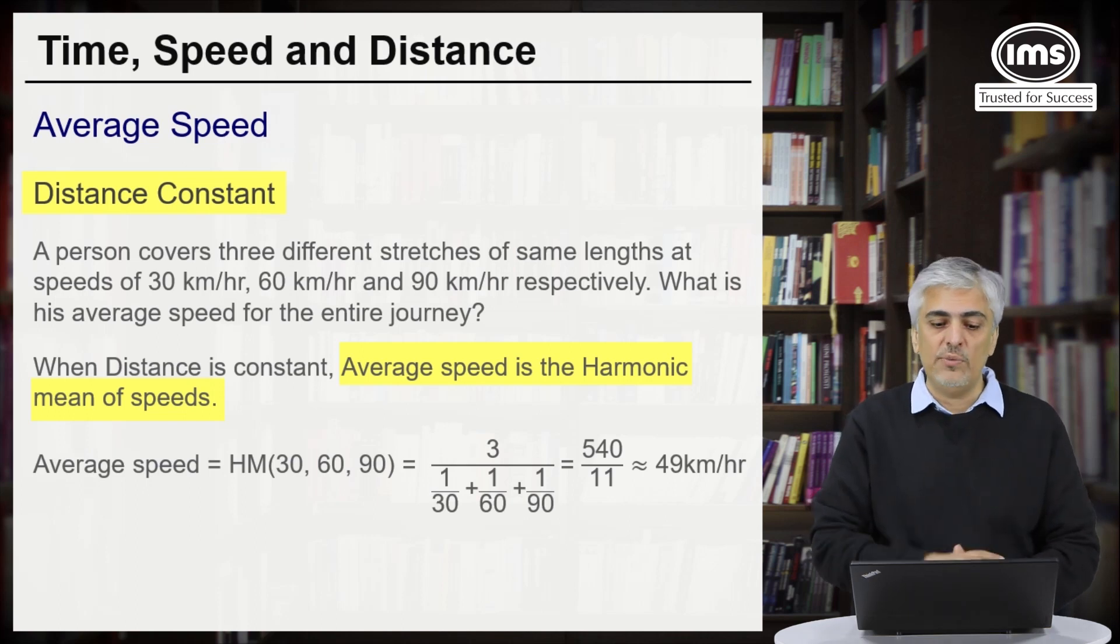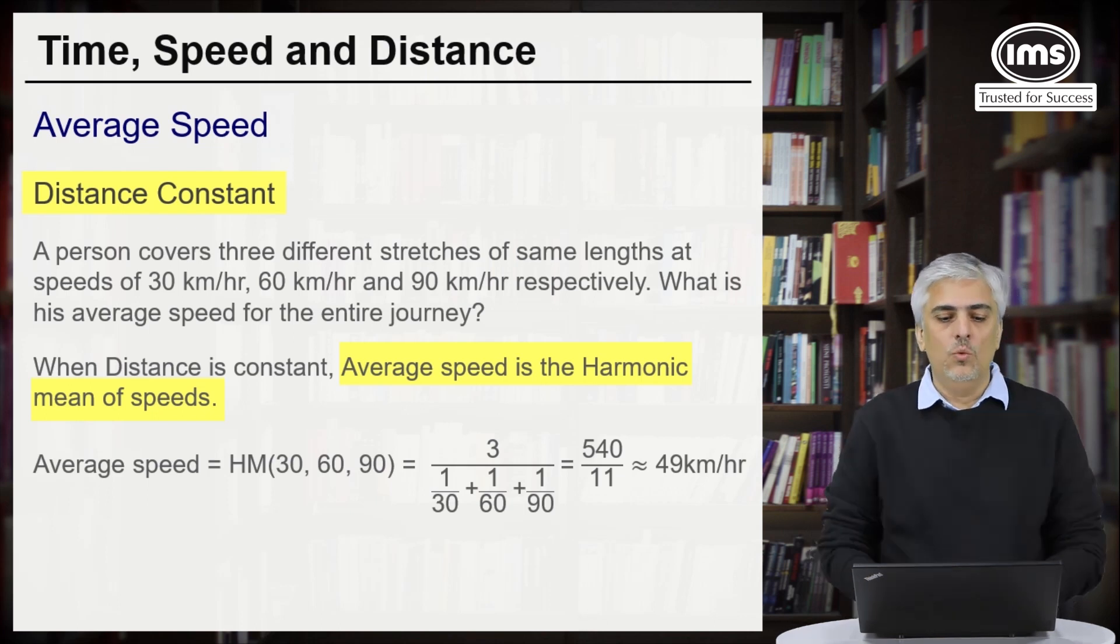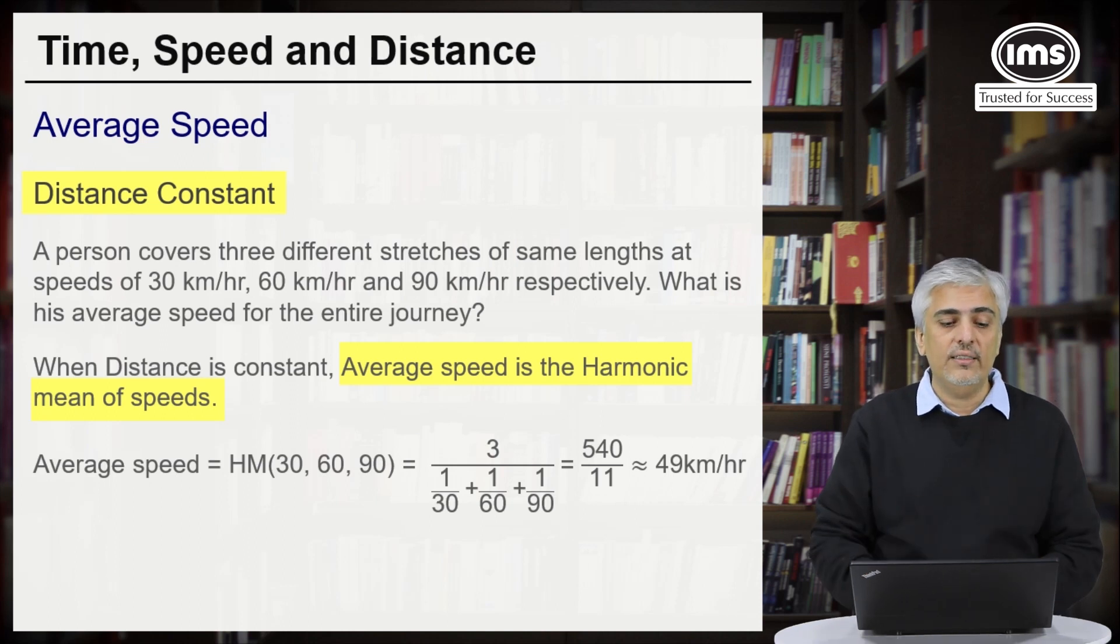So total distance becomes 540. Please look at your calculation. The 540 still comes as it is. What about time in each part? 180 divided by 30 would be 6, 180 divided by 60 would be 3, 180 divided by 90 would be 2. And you would still get the same answer. That is you will still get 11 hours and hence the answer will still be approximately 49 kilometers per hour.